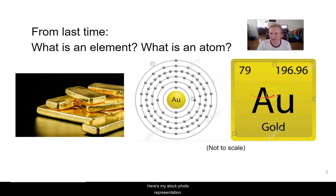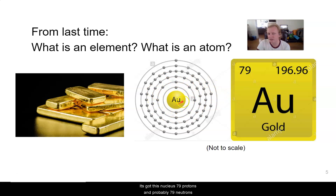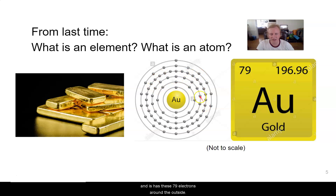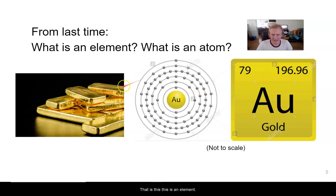Here's a stock photo representation of what a gold atom looks like. It's got this nucleus with about 79 protons, probably 79 neutrons, and it has about 79 electrons around the outside. The smallest unit of an element is an atom.